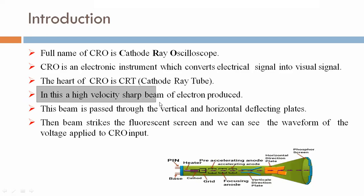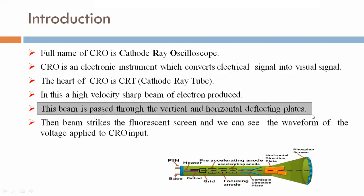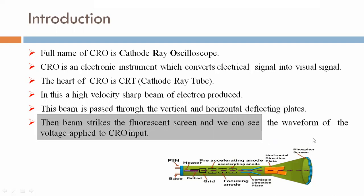In this, a high-velocity sharp beam of electron produced. This beam is passed through the vertical and horizontal deflecting plates. Then beam strikes the fluorescent screen and we can see the waveform of the voltage applied to the CRO input.